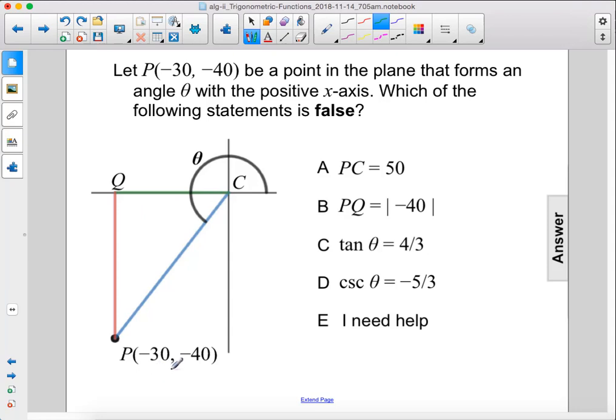Okay, so we have negative 30, so that means this length here is 30 and the point here is at negative 30. And this y length is 40, but it's negative 40 since we're over here in the third quadrant.